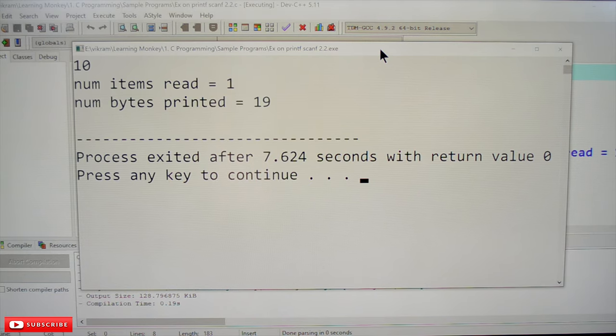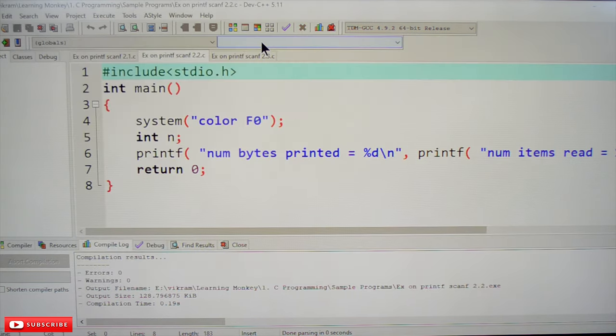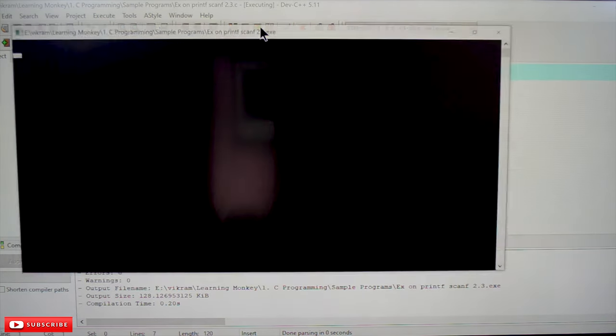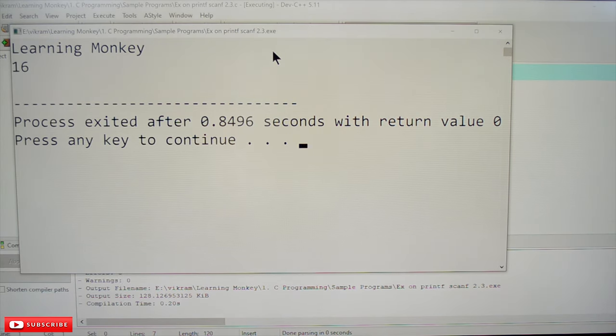So it is our third example, so the bigger example. So it is asking for one input. See, a number of items read: one. And number of bytes printed: 19.